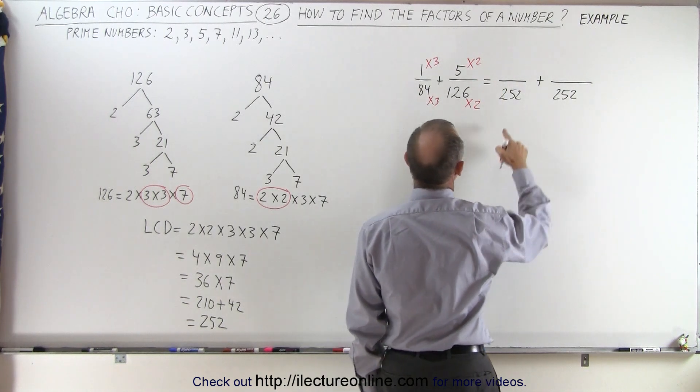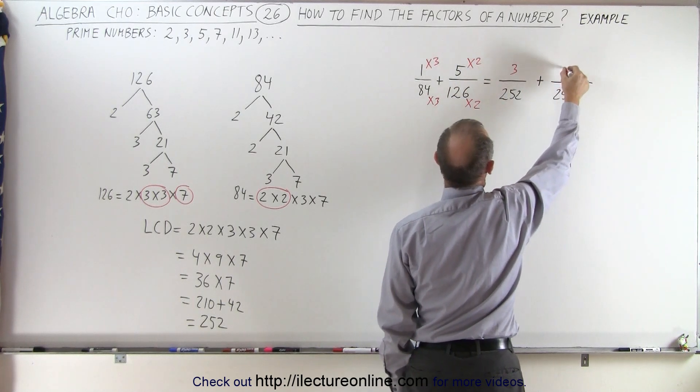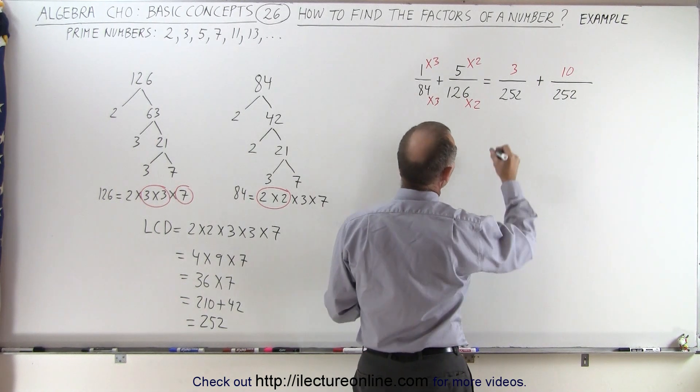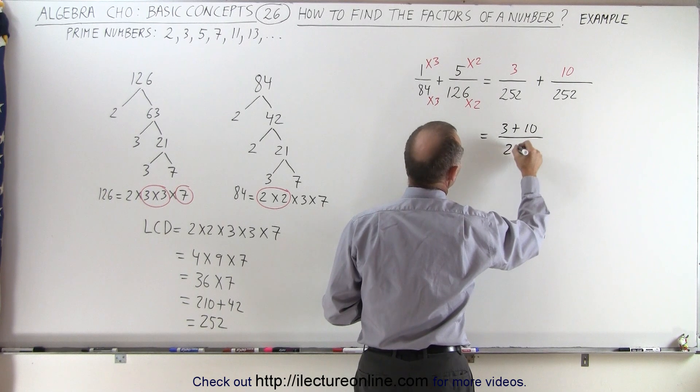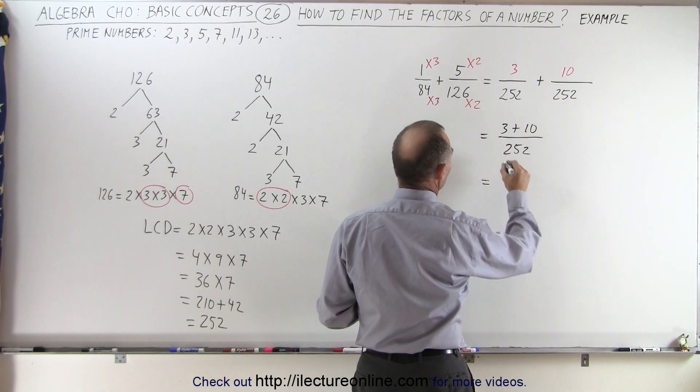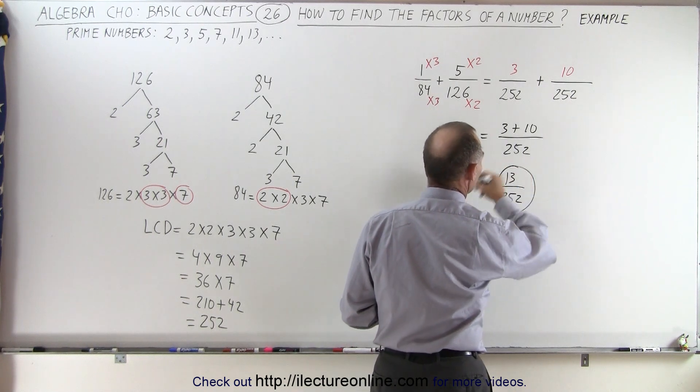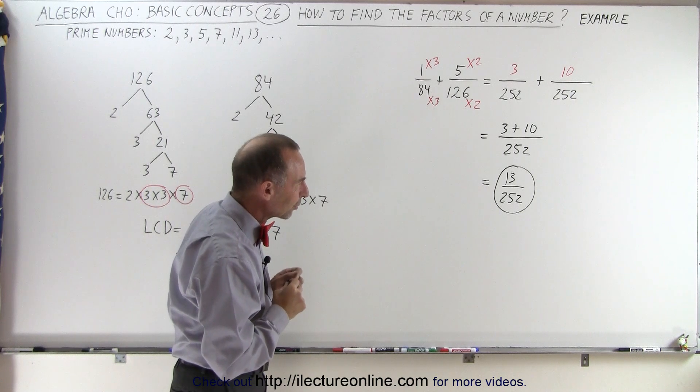The new numerators are 1×3 and 5×2. Adding together: 3+10 over 252, which equals 13/252. Since 13 is a prime number and 252 isn't divisible by 13, that's the most reduced form of the answer.